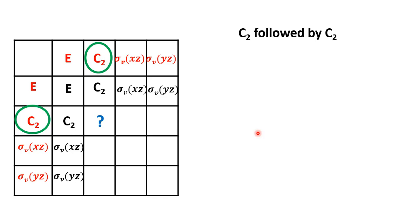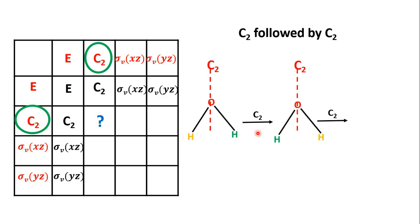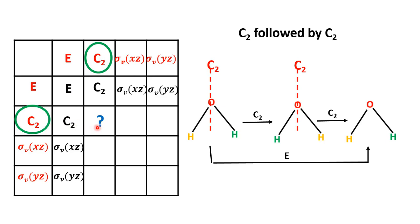Next, consider C2 followed by C2. The C2 axis passes through oxygen, bifurcating the two OH bonds. When C2 is performed — a rotation through 180 degrees — the hydrogen atoms are interchanged: yellow goes to the right, green goes to the left. If we perform C2 again, it comes back to the original arrangement. The combination of these two C2 operations gives E.